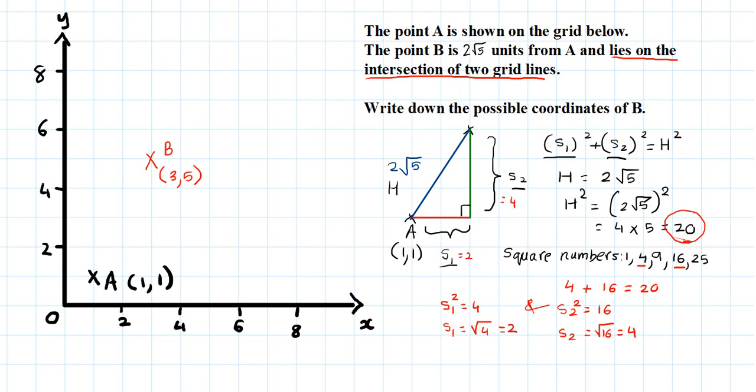The second possible point for B would be when S1 squared is 16. So S1 would be square root of 16, which is 4. So you're going to go 4 across, 1, 2, 3, 4.